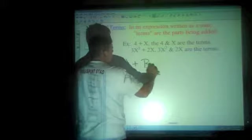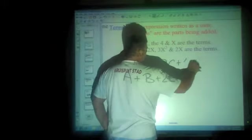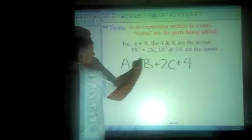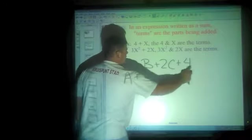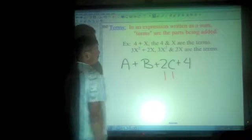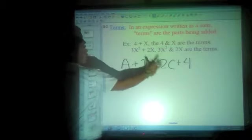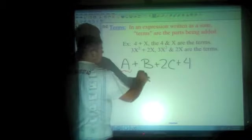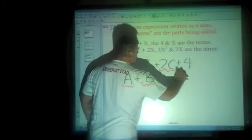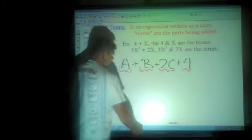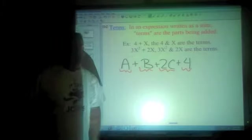A plus B plus 2c plus 4. Term, term, term, and term. Some people think that's a term and that's a term. But 2 is not being added with c. 2c is its own term. So this is a term, this is a term, this is a term, and this is a term. The chunks, the parts being added.